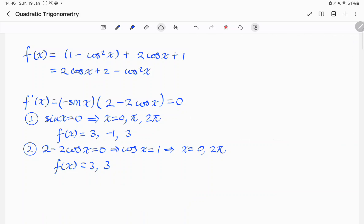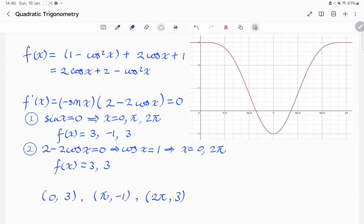Combining all of these solutions, we have (0, 3), (pi, negative 1), and (2 pi, 3) as our stationary points. And we can see all of these features on the graph sketched out on the right here.